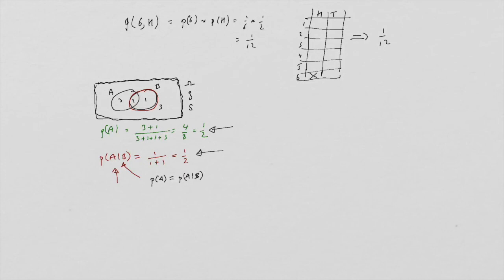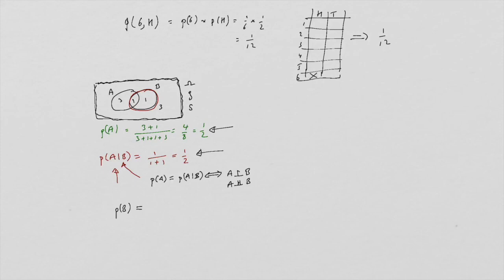There is a symbol for independence, and we can write it in two ways. You can also check for yourself that in this example, if you worked out the probability of B for the whole space, it would be the same as the probability of B given A.